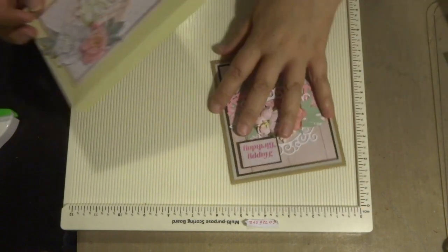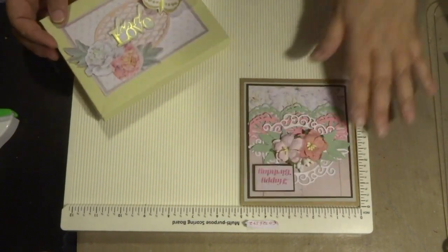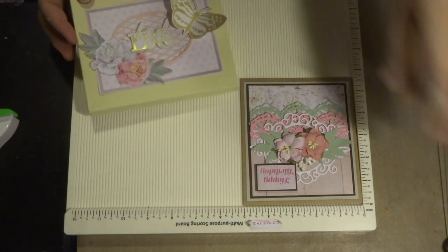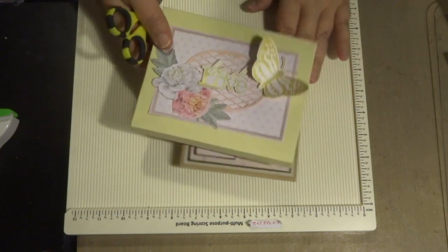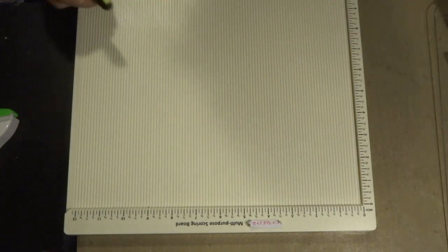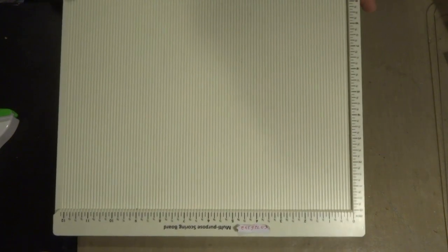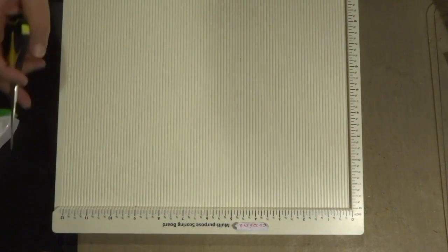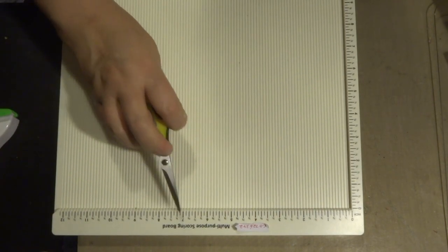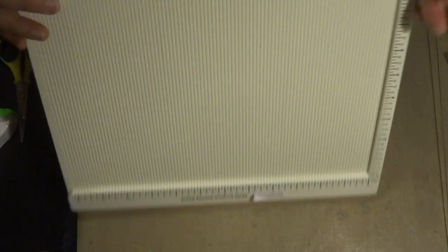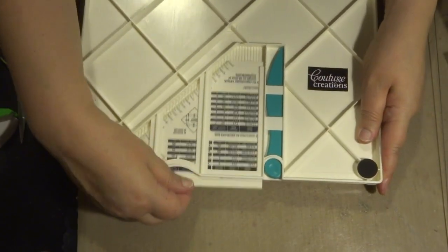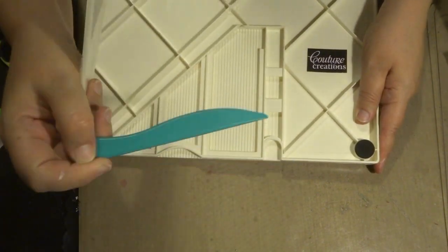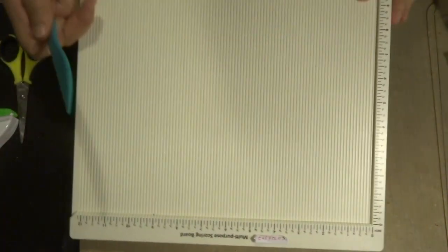For my card, I measured my card and this card is five by five and three quarter inches. On the back of your multi-purpose scoring board, you have measurements on the side and at the top in inches and they're marked in eighth of an inch. On the back there is a template that slides out and also has the bone folder or scorer.